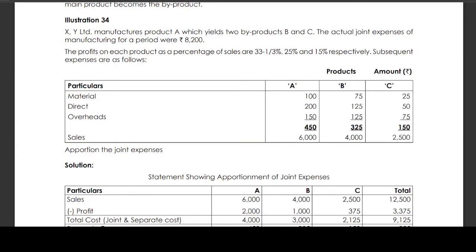Illustration 34: X and Y Limited manufactures product A which yields two byproducts B and C. The actual joint expenses of manufacturing for a period are 8,200 rupees. The profit on each product as a percentage of sales are 33 1/3%, 25%, and 15% respectively.